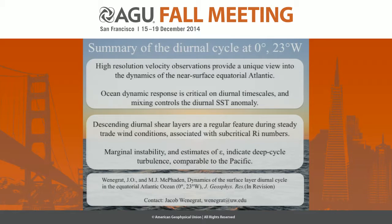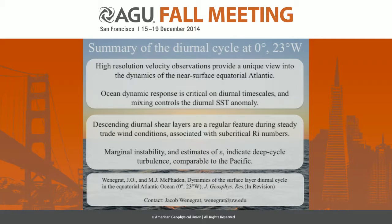In summary, these high-resolution velocity observations provide quite a unique view into the near-surface dynamics, particularly unusual for the equatorial Atlantic. They highlight how critical the ocean dynamic response is on these timescales, and how near-surface mixing processes set the diurnal SST anomaly, which is so important for atmospheric boundary layer processes. In connection with the recent Pacific literature, we too see regular descent of a diurnal shear layer associated with subcritical Richardson numbers, and indirect evidence such as marginal instability and elevated turbulent dissipation rates are both suggestive of deep cycle turbulence at this location. We expect to see a lot of interesting work coming out of the Atlantic over the following years.